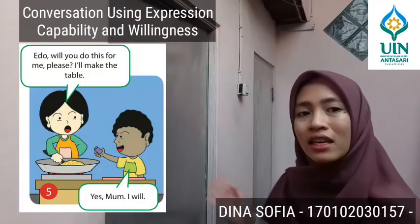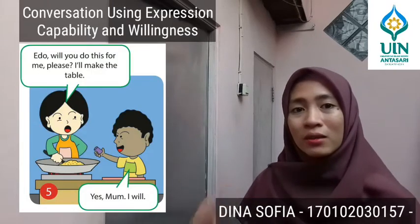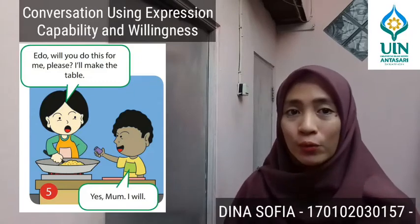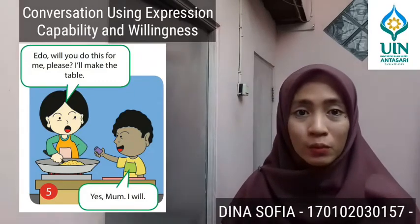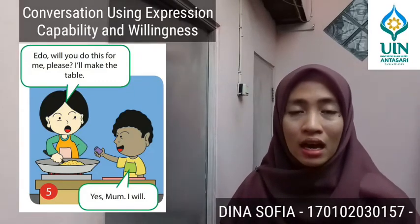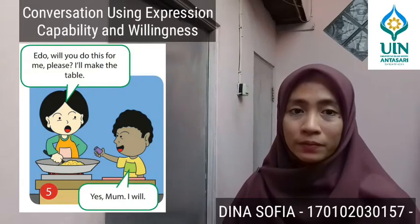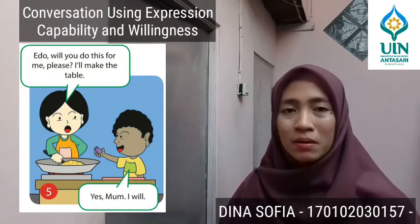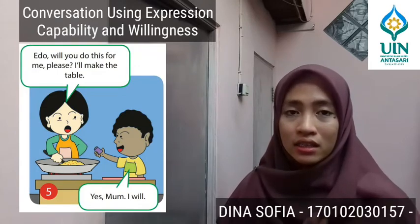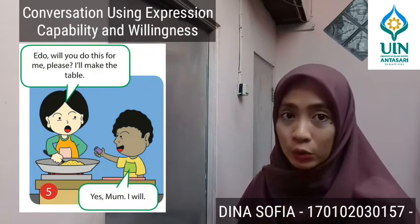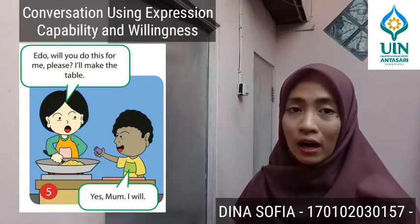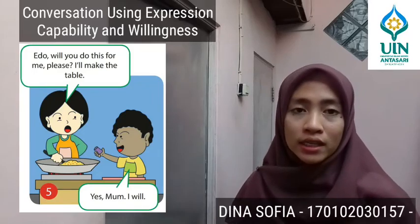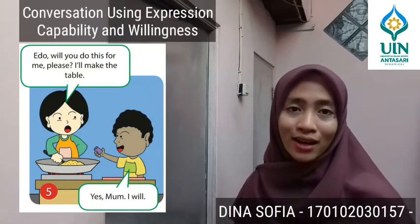Antara Edo dan ibunya: 'Edo, will you do this for me please? I will set the table.' 'Yes, ma'am, I will.' Disini ibunya meminta Edo untuk menolongnya, dan kita bisa melihat 'Will you?' — maukah kamu — dan jawaban dari Edo adalah 'I will', yang berarti saya akan melakukannya.